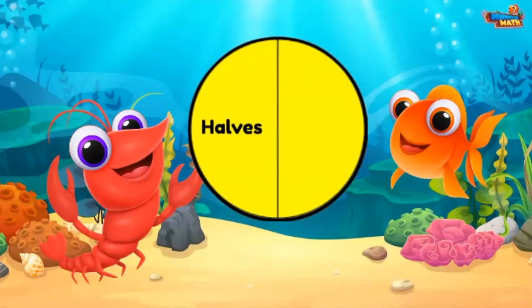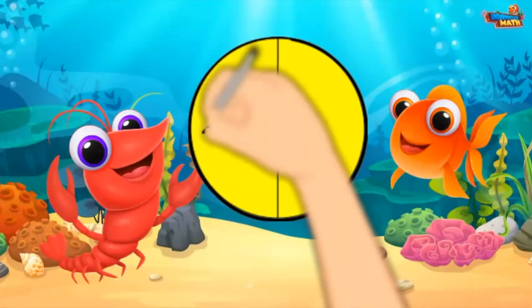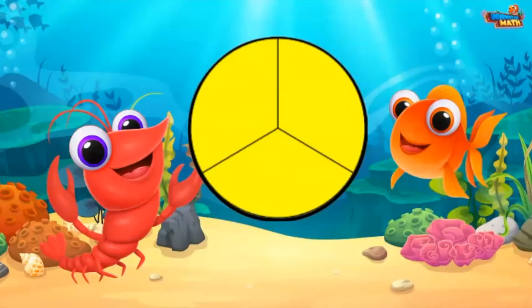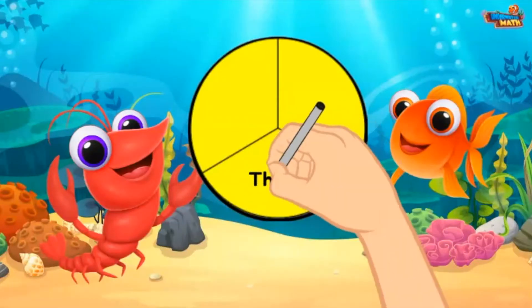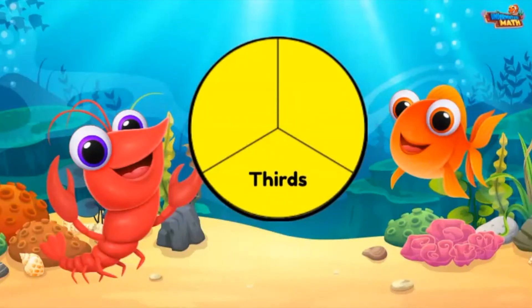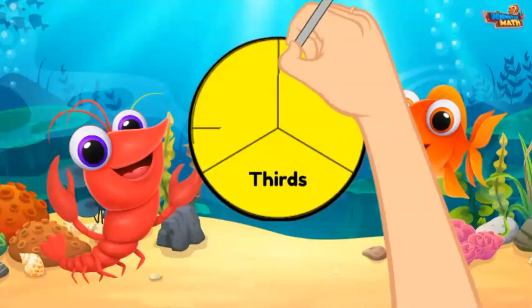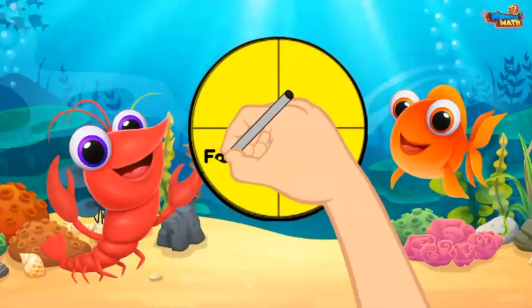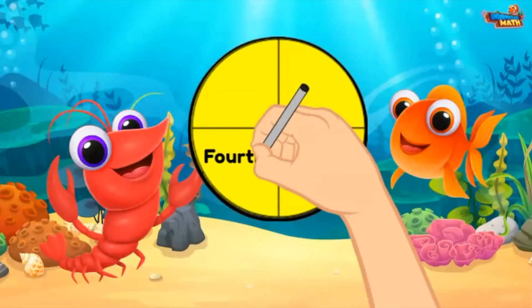I will partition the circle into three parts. These parts are called thirds. I will partition the circle into four equal parts. These parts are called fourths.